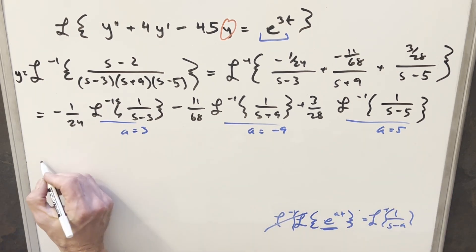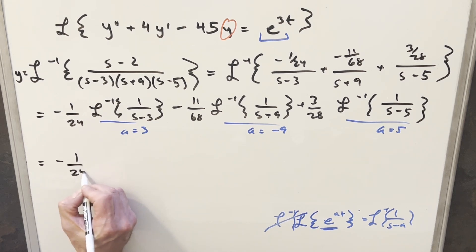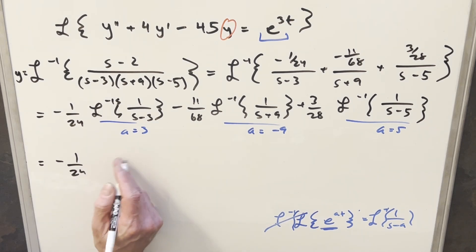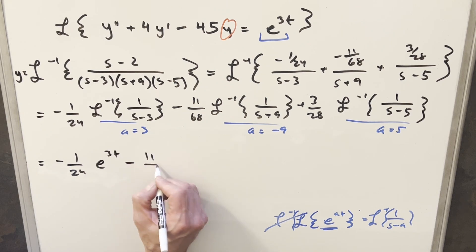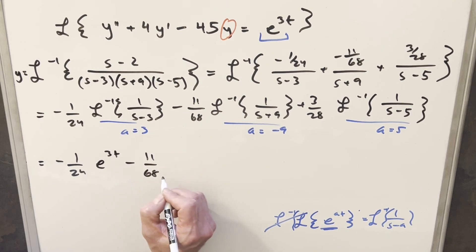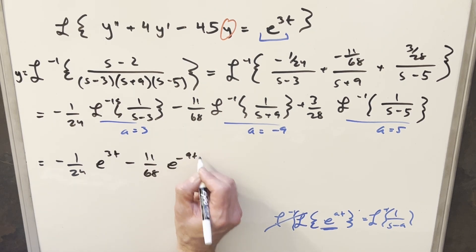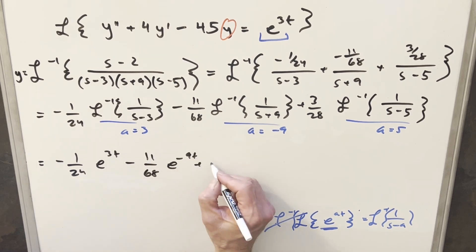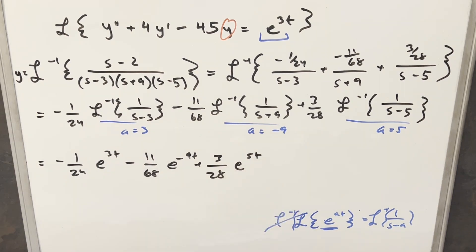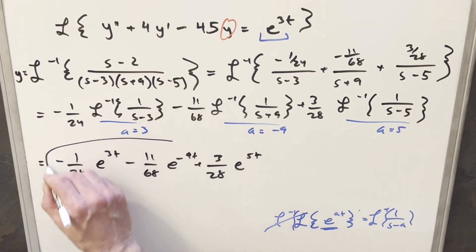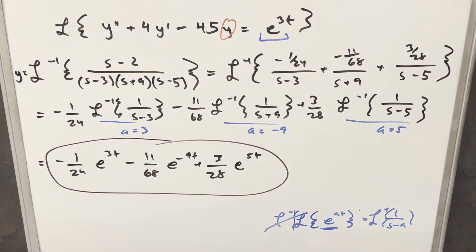So our final solution is y equals negative 1 over 24 times e to the 3t, minus 11 over 168 times e to the negative 9t, plus 3 over 28 times e to the 5t. And that's it — there you have a second order non-homogeneous differential equation solved with Laplace transforms. Thanks everyone for watching today, have a good day.